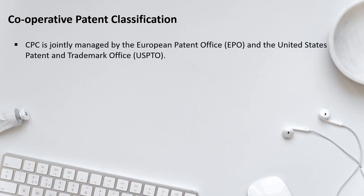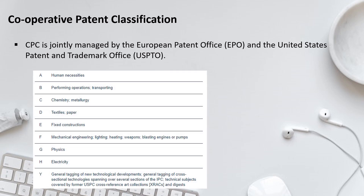The Cooperative Patent Classification (CPC) is jointly managed by the European Patent Office and the United States Patent and Trademark Office. Previously, the EPO and USPTO had separate patent classification systems, but a more systematic and uniform system was developed — the CPC. It similarly arranges patent applications and helps in identifying or searching them more easily. CPC has nine sections: A to H, and additionally Y, each with a specific broad category title.